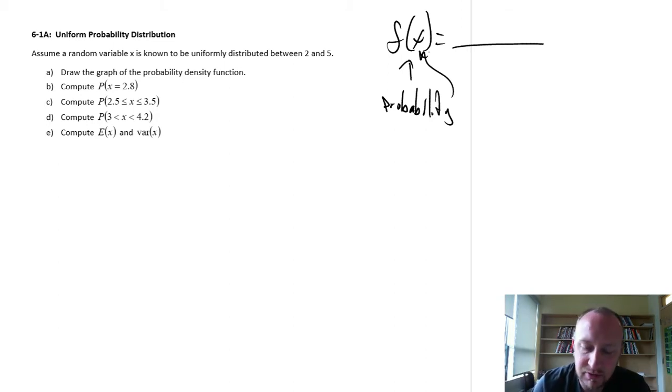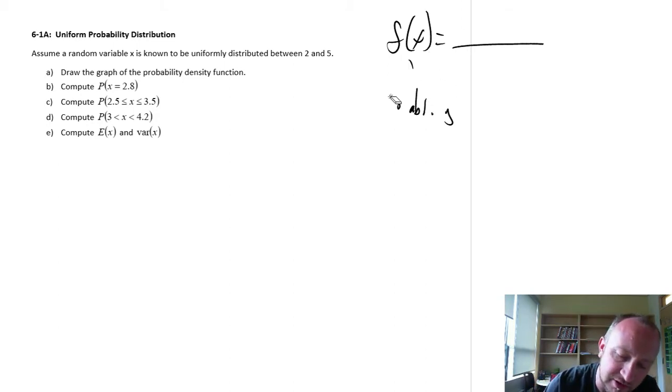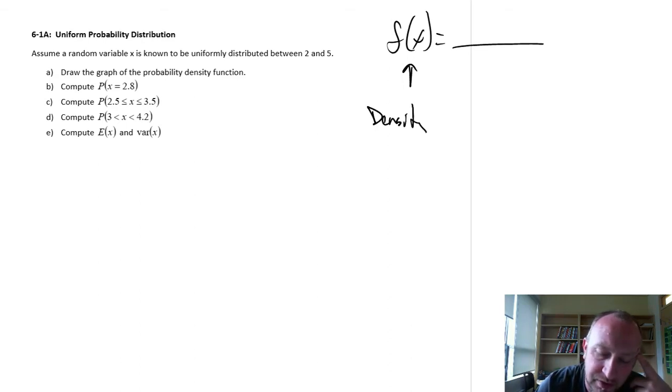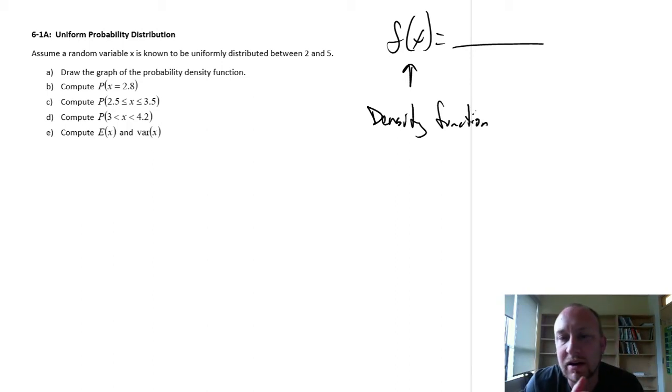With the continuous probability distributions, those are no longer probabilities, and this becomes the functional form of what is called the density function. Now when we're trying to obtain probabilities, we're no longer obtaining probabilities of a specific value, rather we're obtaining probabilities that our variable takes on a range of values.